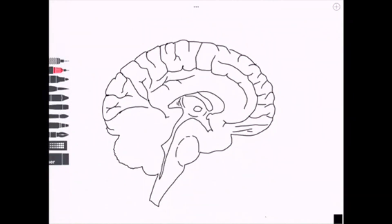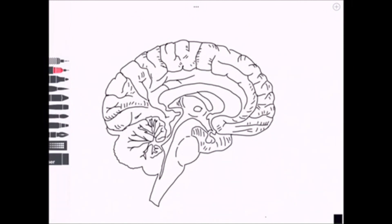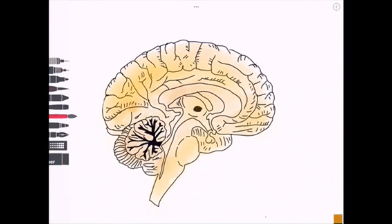We're drawing a diagram that resembles a medial aspect of a sagittal section and we can begin to label on some of the main structures that you'll need to know. First of all we can label on the occipital lobe, which is important for dealing with visual information.